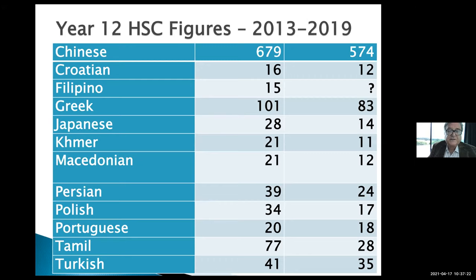At the same time, the population of those students has increased. Older languages like Greek have fallen dramatically, but even newer languages like Persian and Tamil have also fallen. New South Wales has the lowest provision and uptake of all states in Australia, and Australia is at the bottom of all OECD countries in terms of the uptake and provision of languages. We can work to change this, but the main point is that your work in community language schools is so important.